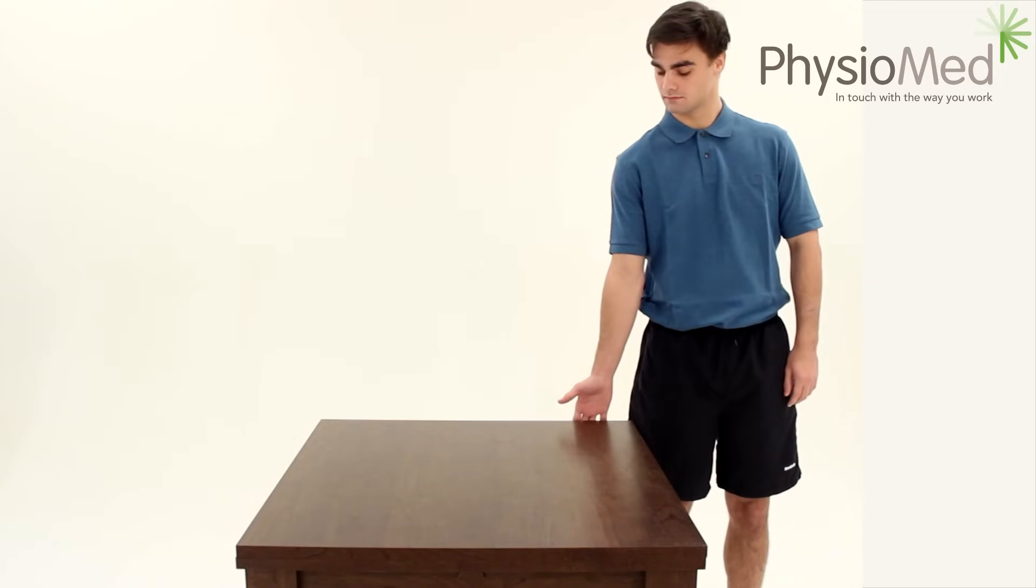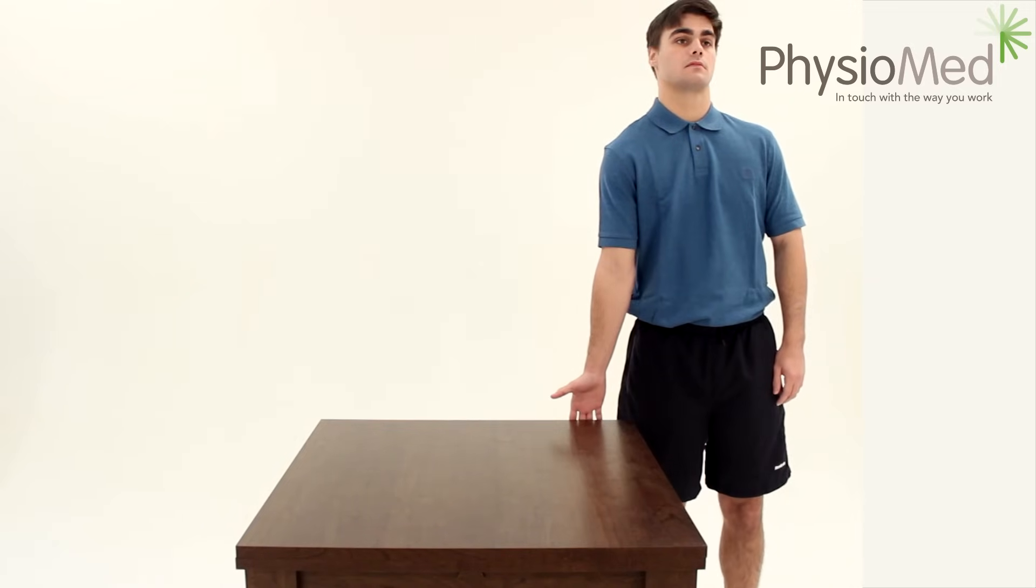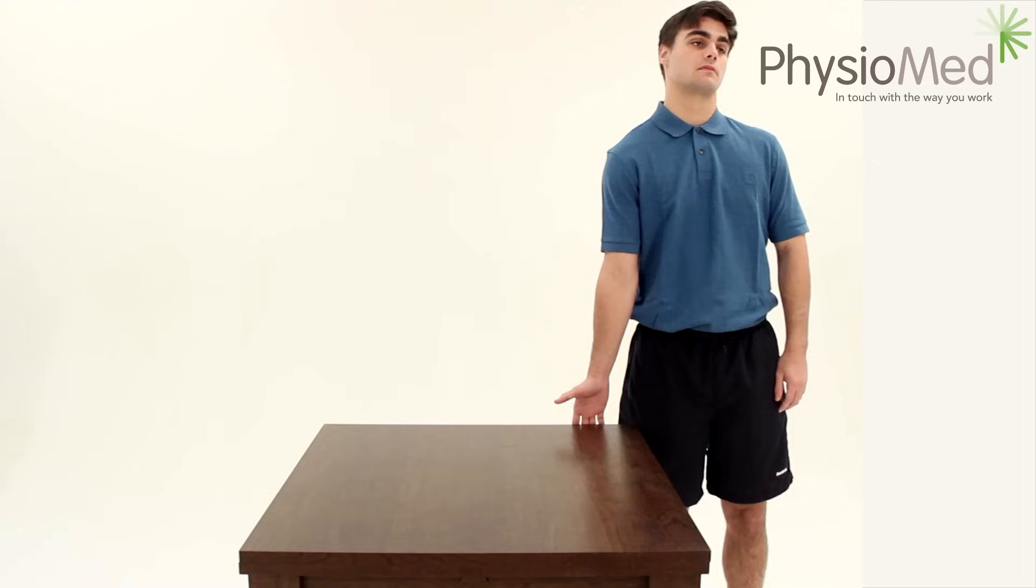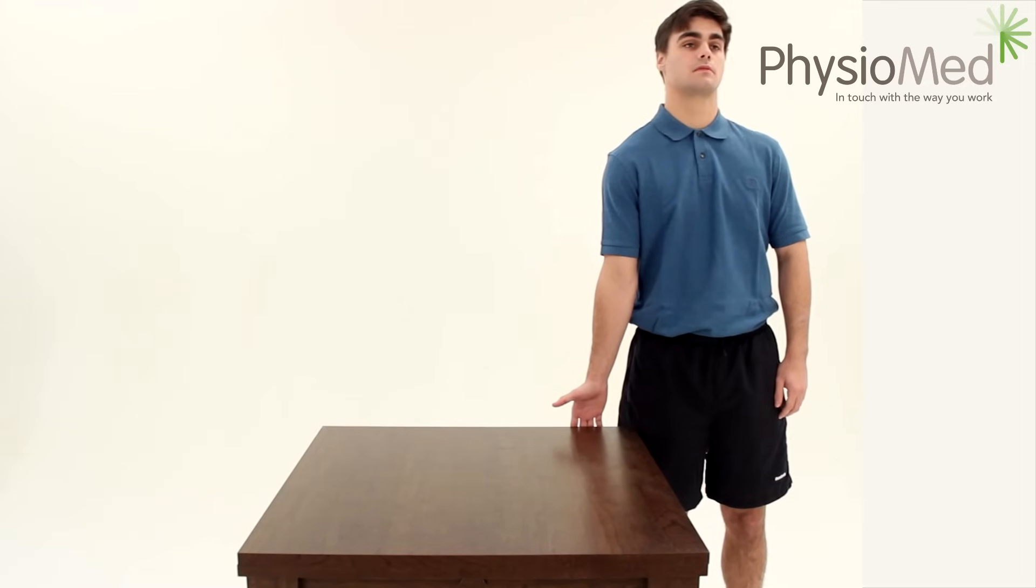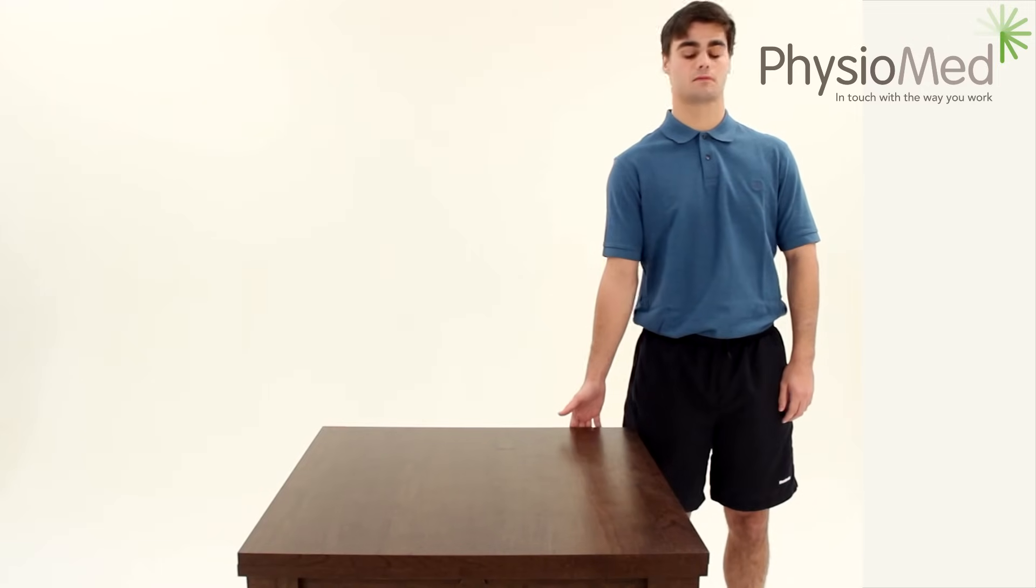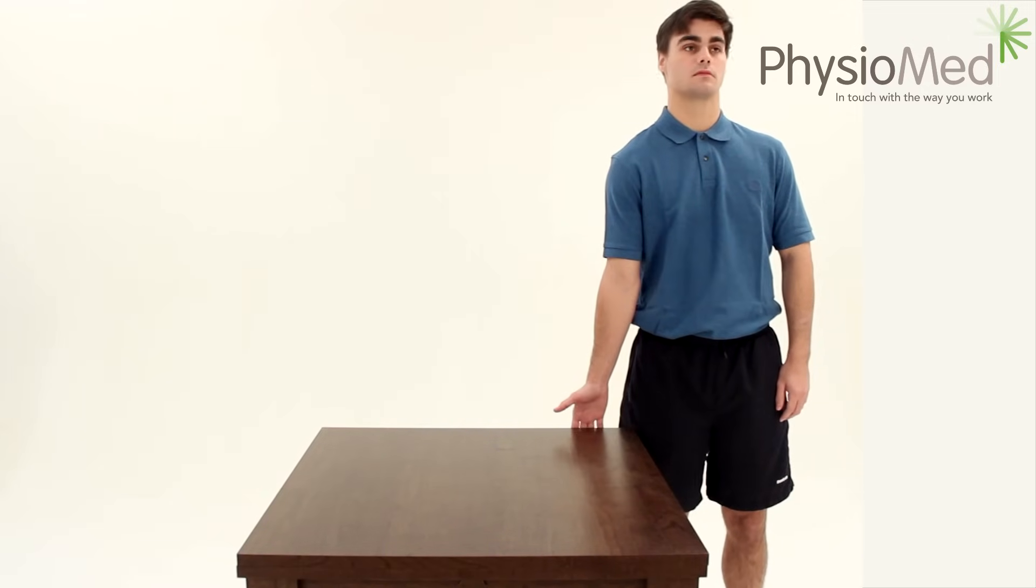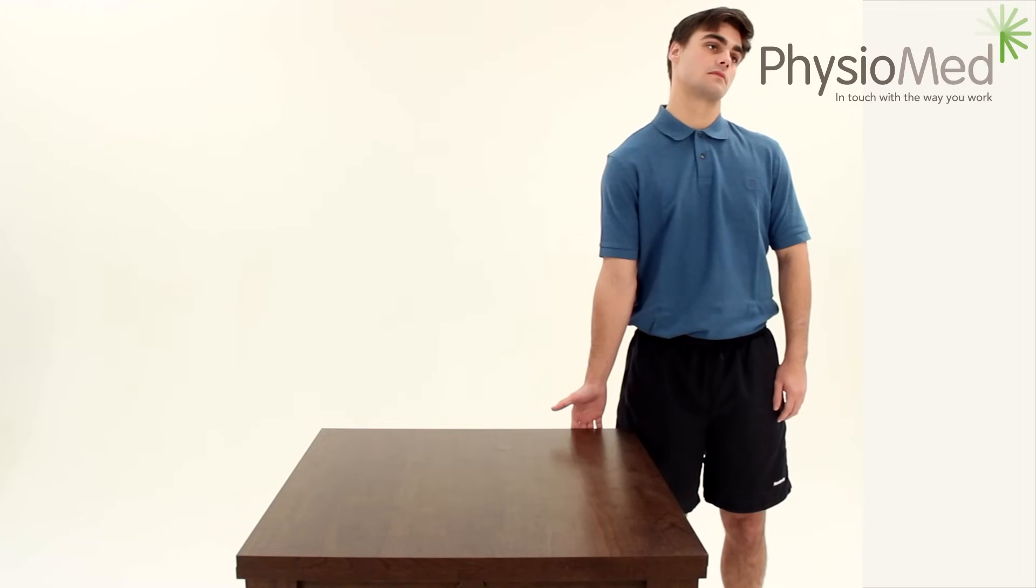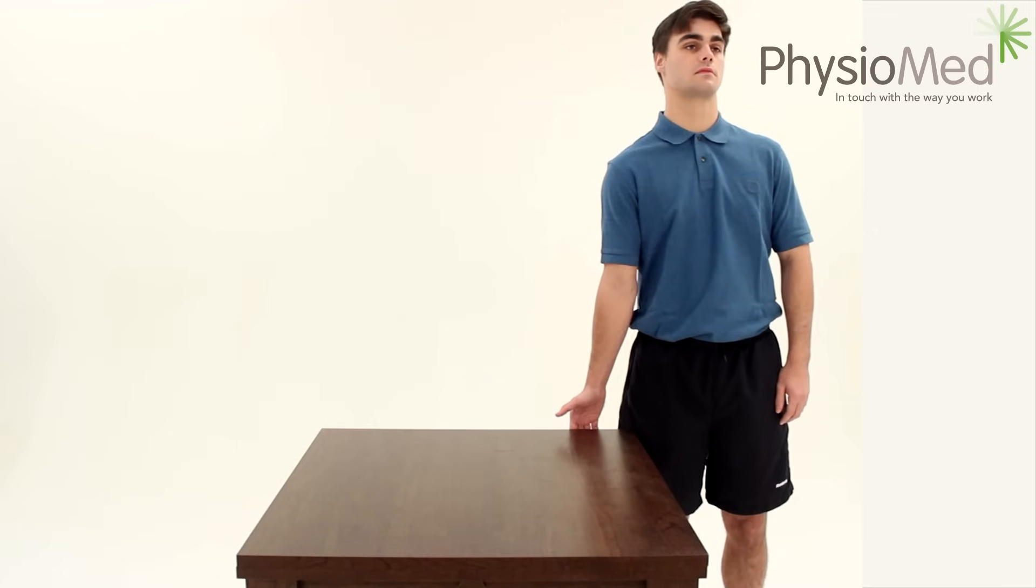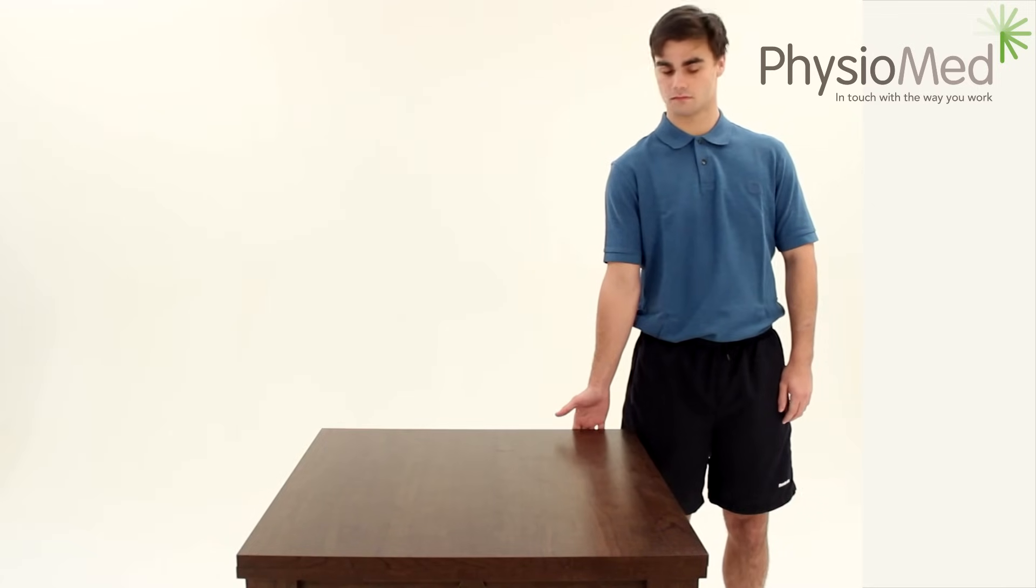Stand beside a table and hold onto the edge with your hand. Very gently, pull down your shoulder and you will feel the stretch between your shoulder and neck. If you want to increase the stretch, side bend your head to the opposite side, ear to shoulder and maintain a position for 2-3 seconds. Repeat this 3 times on either shoulder, once a day.